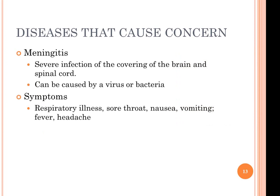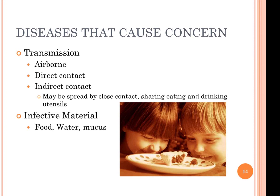Meningitis is another disease of concern. It's a severe infection covering the brain and spinal cord and can be caused by a virus or bacteria. Symptoms can include respiratory illness, sore throat, nausea, vomiting, fever, or headache. It can be transmitted by airborne, direct contact, indirect contact, and may be spread by sharing eating and drinking utensils. Many times among college students there have been meningitis outbreaks related to sharing eating and drinking utensils.